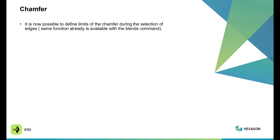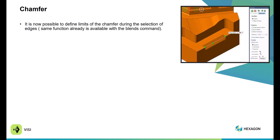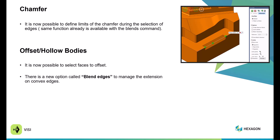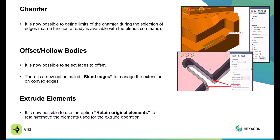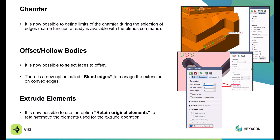Within Chamfer, it is now possible to define the Limit options — just like with Blend, you can now set limits within the Chamfer command. Within Offset Hollow Bodies, it is now possible to offset faces, and when offsetting faces, you can add a blend edge to an extension face of a convex edge. Within Extrude Elements, the Retain Original Elements option is on and is used by the Extrude operations.